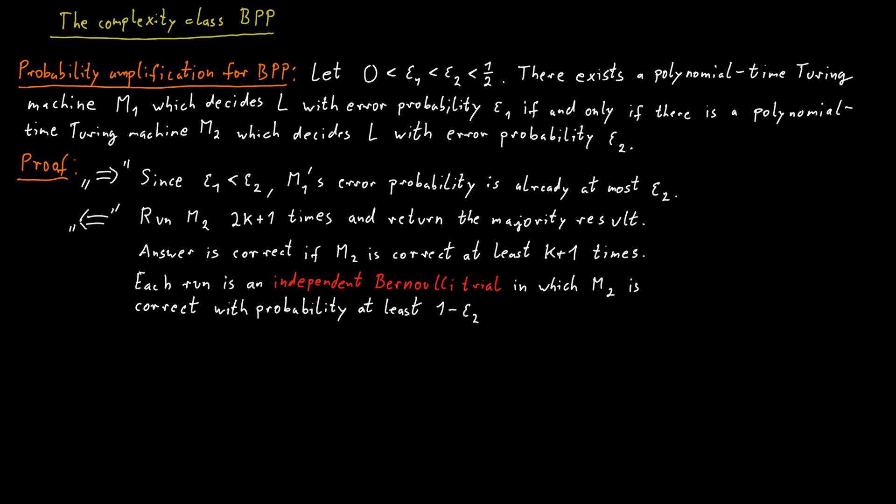And because epsilon 2 is strictly smaller than 1 half, 1 minus epsilon 2 must be strictly bigger than 1 half. A very important thing from statistics is called a Chernoff bound which tells us something about the probability that the majority of these independent Bernoulli trials is incorrect.